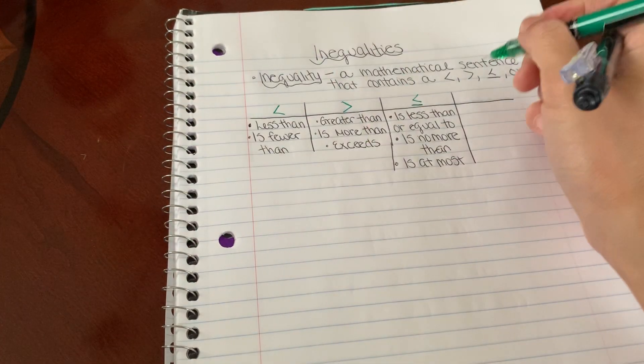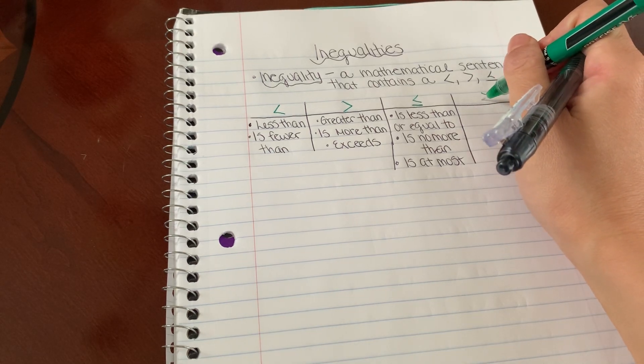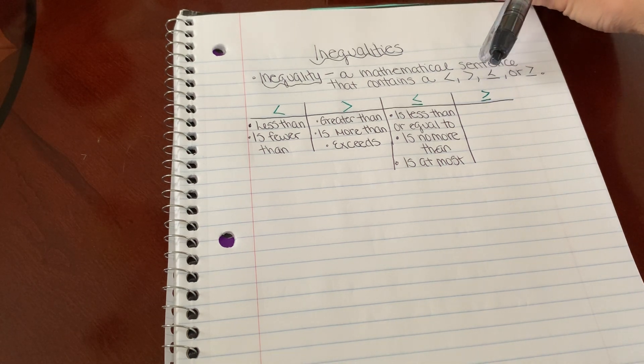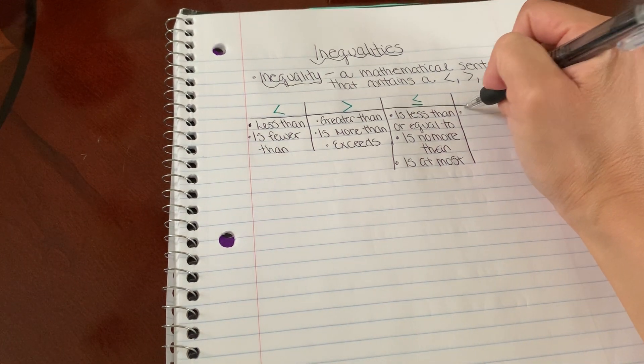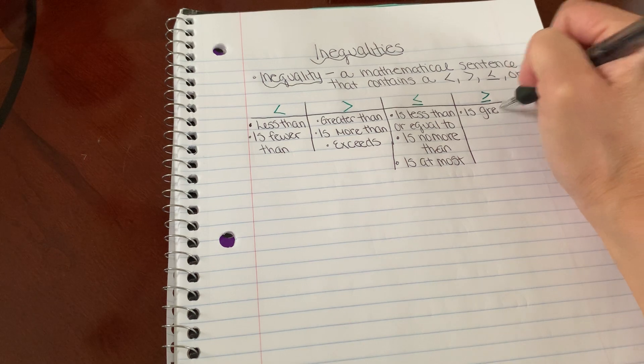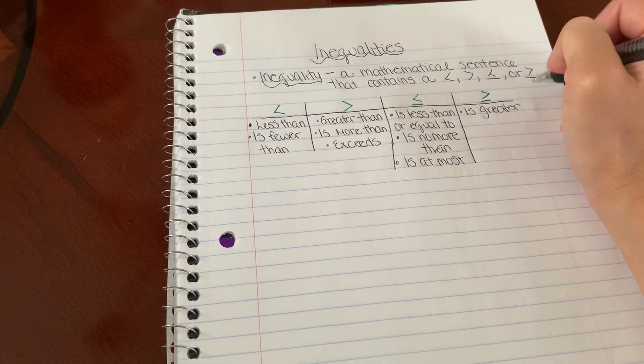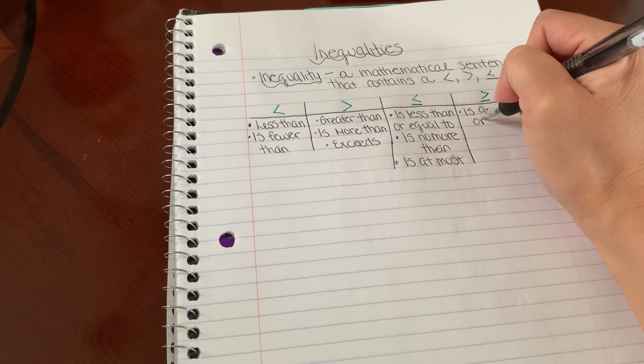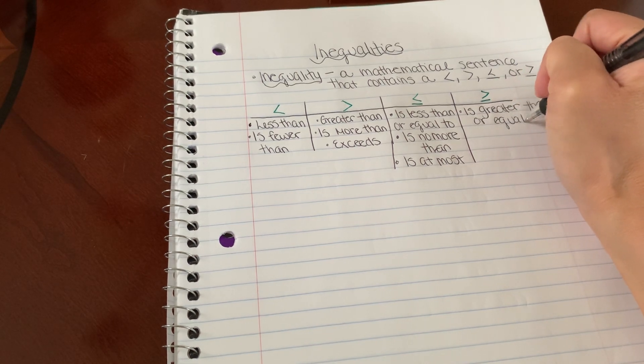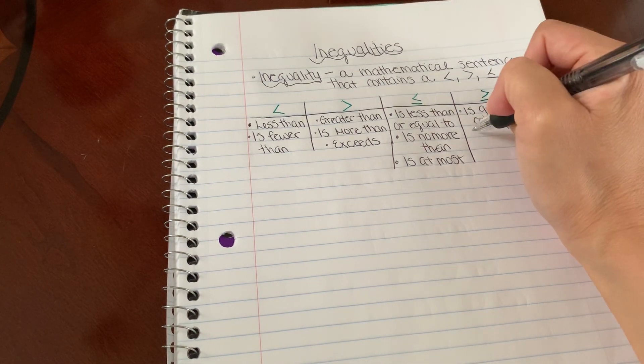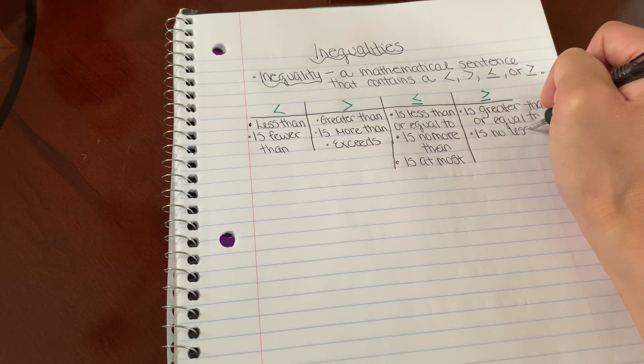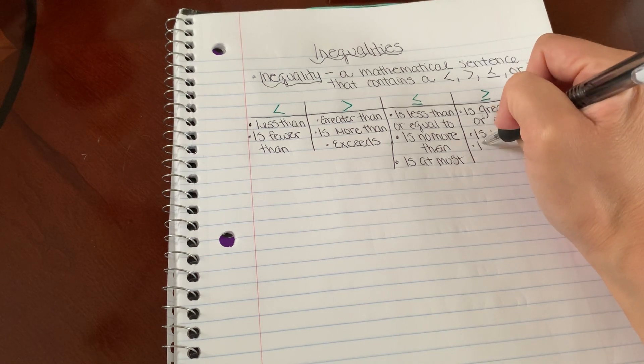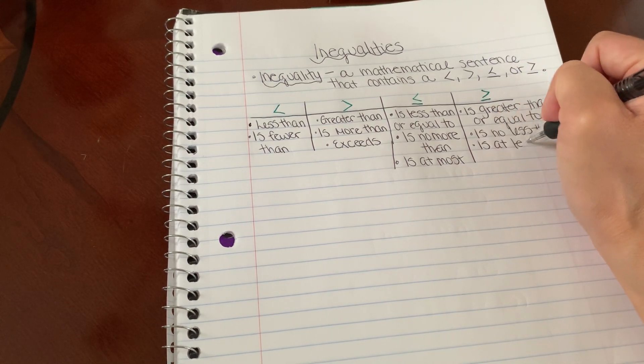And then our last symbol is the greater than symbol with a line under it. And this means is greater than or equal to, is no less than, and then is at least.